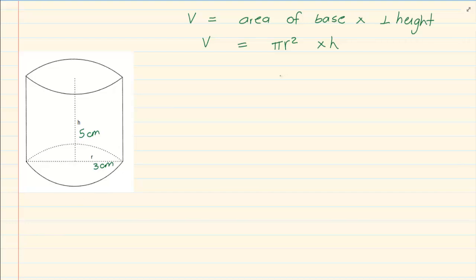So in this question I am going to have pi and then 3 because I am working with the radius. So it would be 3 squared times my height would be 5.